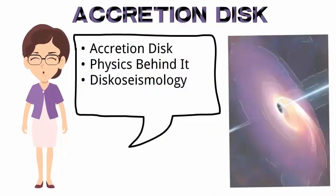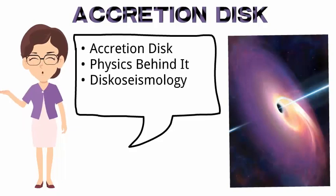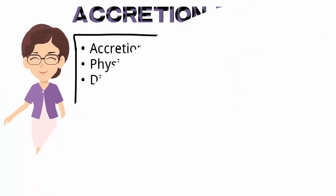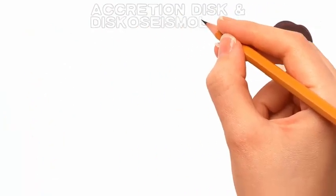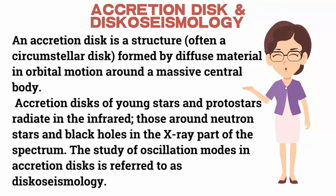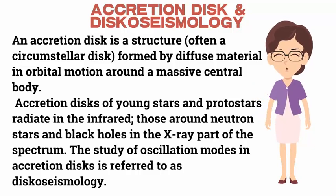In this video we will understand what is an accretion disk, the physics behind it, and the term discoseismology. An accretion disk is a structure, often a circumstellar disk, formed by diffuse material in orbital motion around a massive central body.